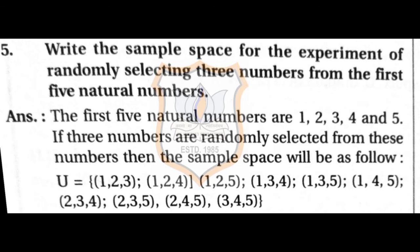Question 5: Write the sample space for randomly selecting three numbers from the first five natural numbers 1, 2, 3, 4, 5. Keeping 1,2 constant: {1,2,3}, {1,2,4}, {1,2,5}. Then taking 1,3 constant: {1,3,4}, {1,3,5}. Then {1,4,5}.